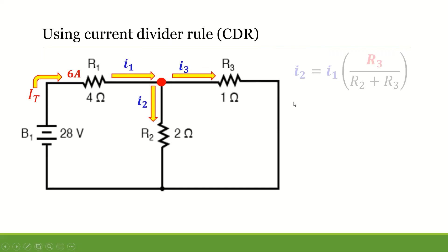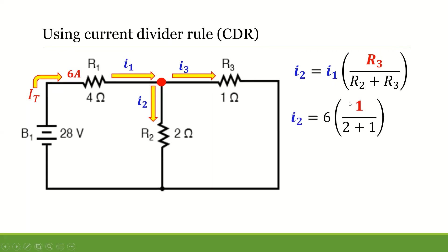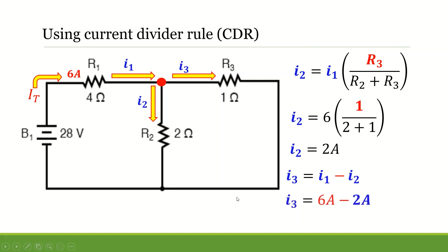Using the current divider rule, to solve for I2 first: the equation is I1 multiplied by the opposite resistor R3 divided by the sum R2 plus R3. Substituting: I1 is 6, R3 is 1, divided by R2 (2 ohms) plus 1, giving 6 times 1 divided by 3, equals 2 amperes. To get I3, subtract I2 from I1: 6 amperes minus 2 amperes gives I3 equals 4 amperes.